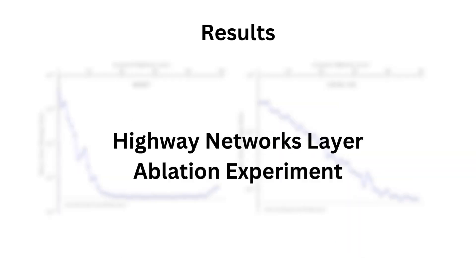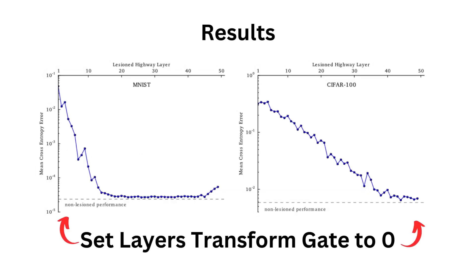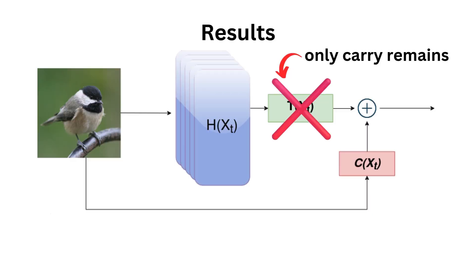The last experiment we'll take a look at is an ablation study they did on their highway networks in order to see which of the layers was actually important. How they did the ablation is by setting a transform gate to zero, which means that it only does a carry at a specific layer. So as we can see over here, only carry behavior from the previous layer output is available.